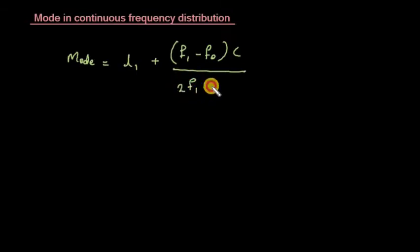From the modal class, mode is calculated using the interpolation formula which is given as: Mode = L₁ + (F₁ - F₀) × C / (2F₁ - F₀ - F₂).